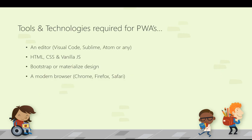To create a PWA application, you need an editor — Visual Studio Code, Sublime, Atom, or any editor — and the three technologies: HTML, CSS, and vanilla JavaScript. Vanilla JavaScript is very similar to regular JavaScript, so no need to worry. Bootstrap for responsiveness or Material Design by Google can also be utilized. You also need a modern browser like Chrome, Safari, or Firefox, as PWAs are only supported in the latest browsers.